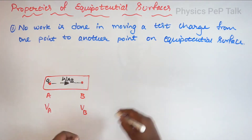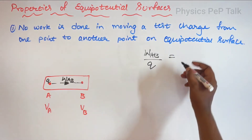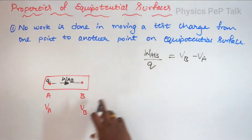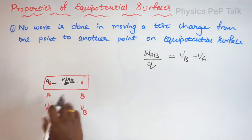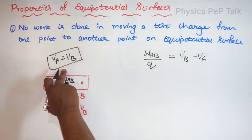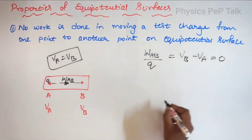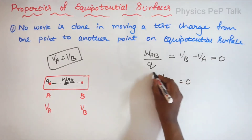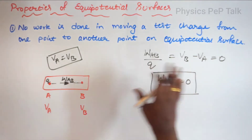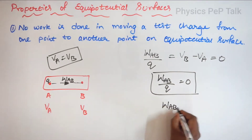By the basic definition of electric potential, the work done in moving a charge from point A to point B divided by the charge is the difference in electric potentials: V of B minus V of A. On an equipotential surface, V of A must equal V of B — this is the basic condition. Substituting, V of B minus V of A equals zero, so the right-hand side becomes zero. Therefore W of AB over Q equals zero. Since Q cannot be zero (we are moving a charge), W of AB must equal zero.